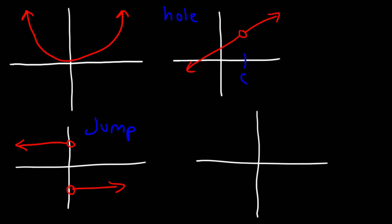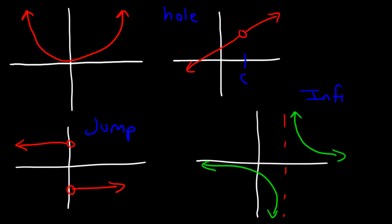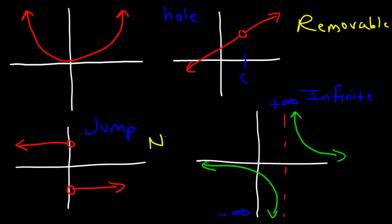And then there's another type: this discontinuity is known as an infinite discontinuity. As you approach the vertical asymptote, on the right side it approaches positive infinity, and on the left, negative infinity. Now you need to know that the hole is a removable discontinuity, but the other two — the jump discontinuity and the infinite discontinuity — are non-removable discontinuities.